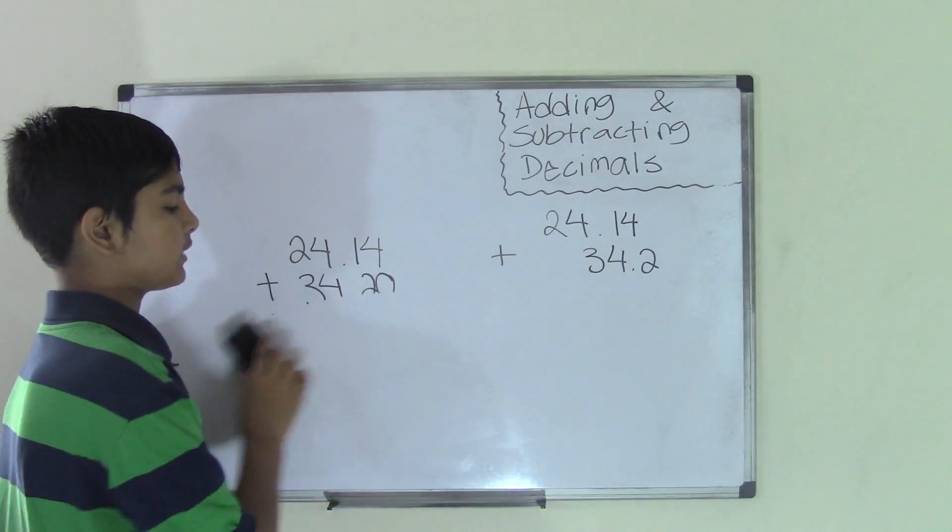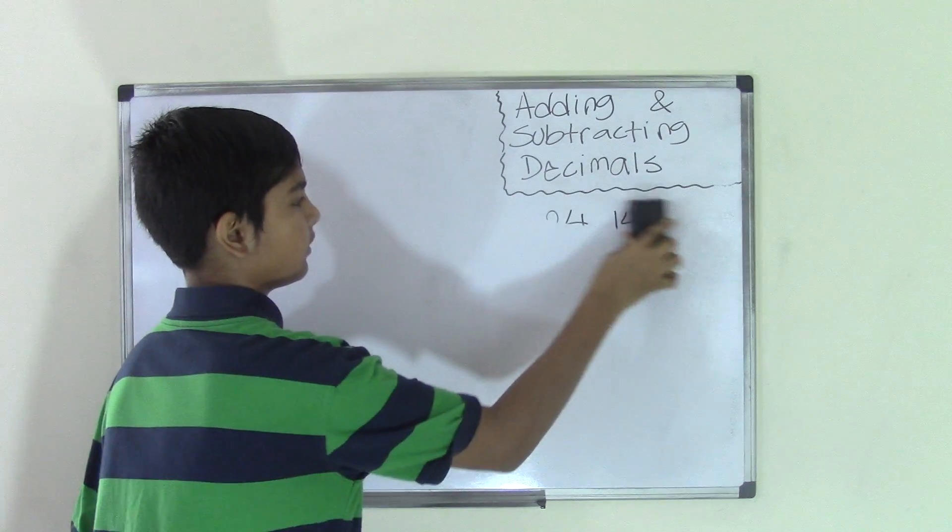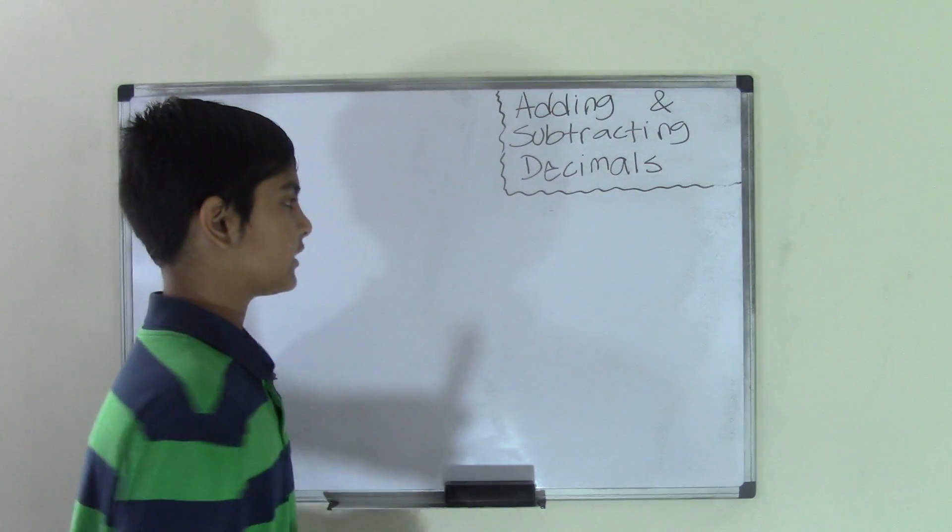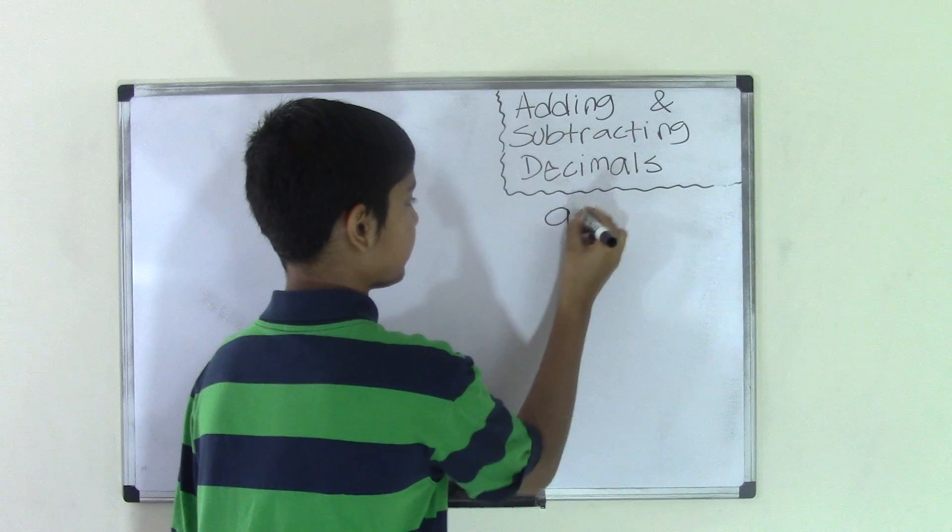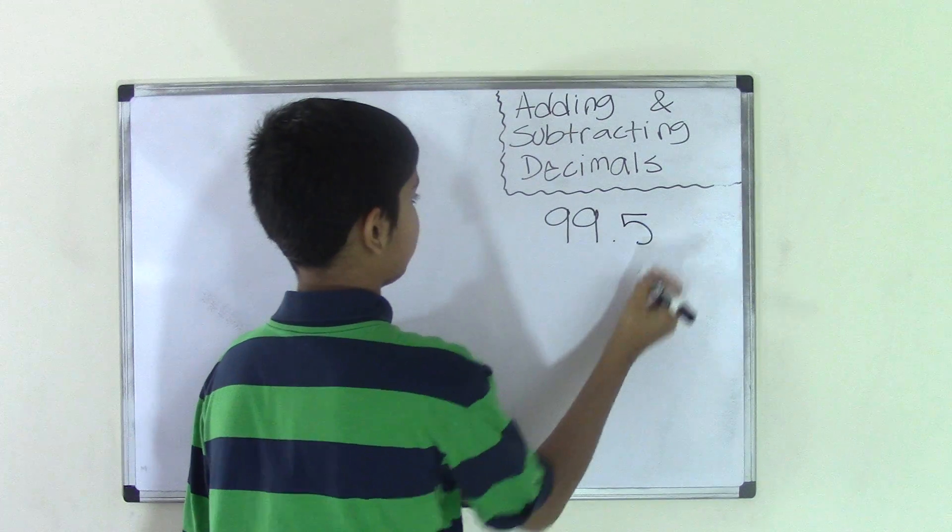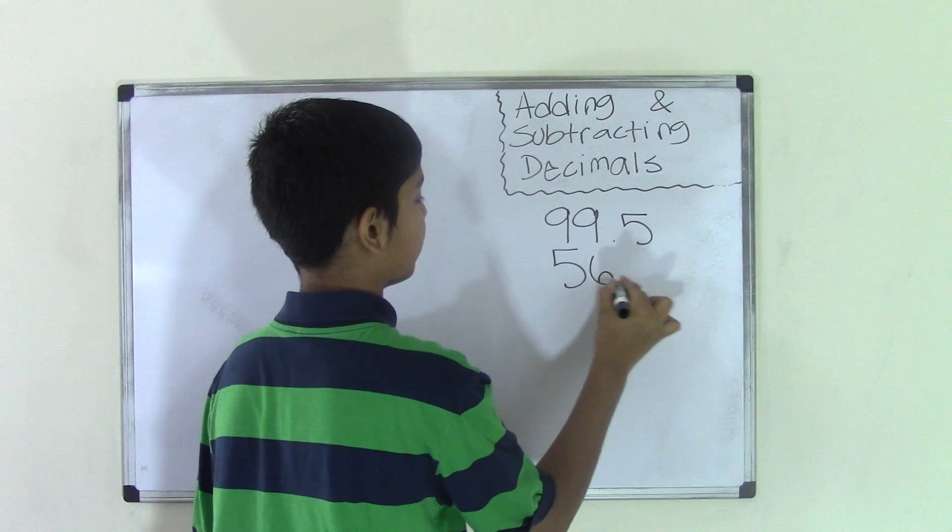Now let's subtract decimal numbers. So to subtract, we need two numbers. So let's take the two numbers 99.5 and 56.4.